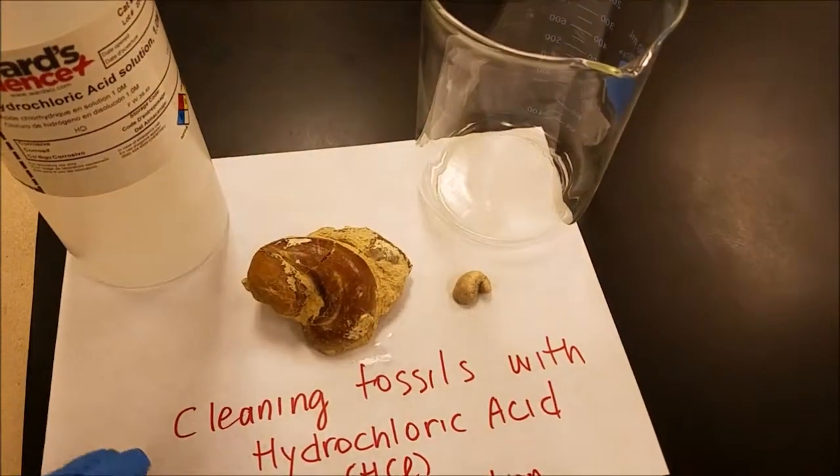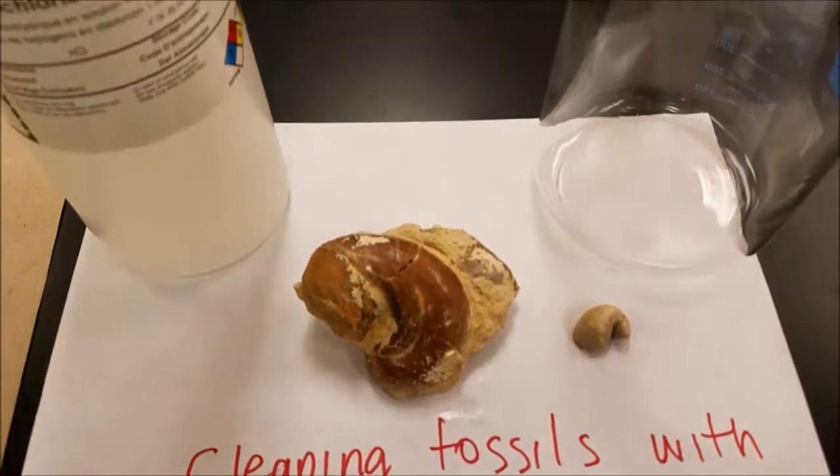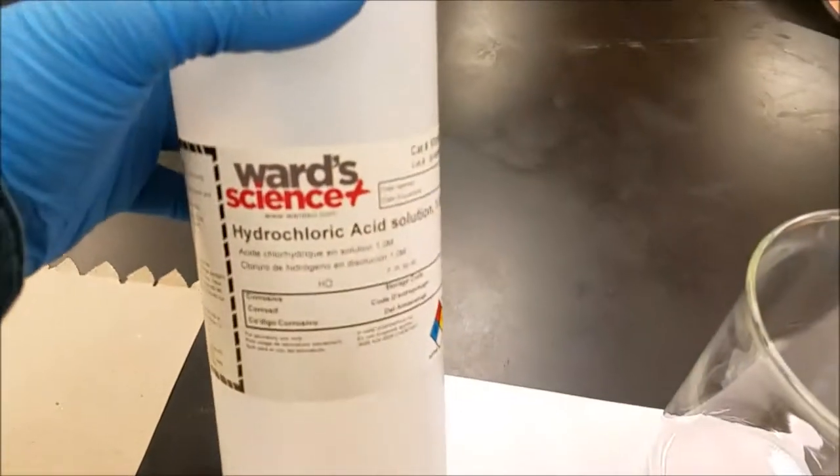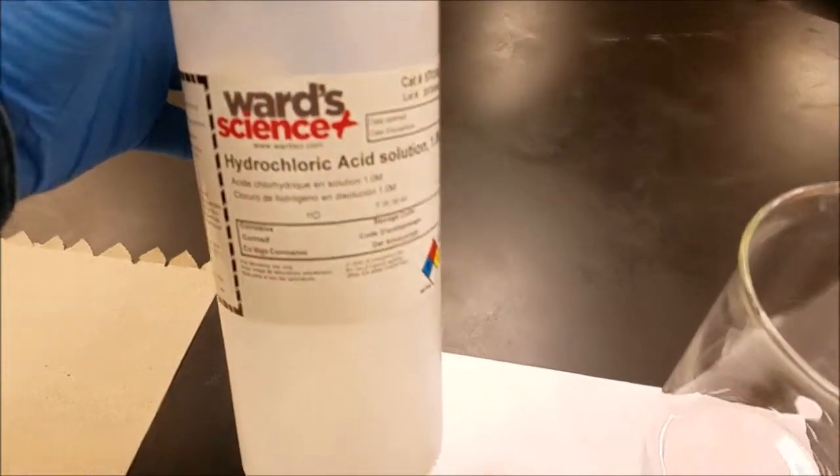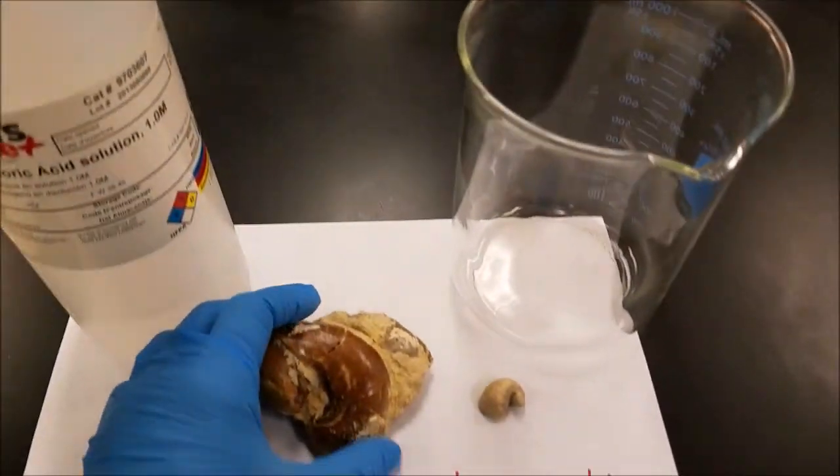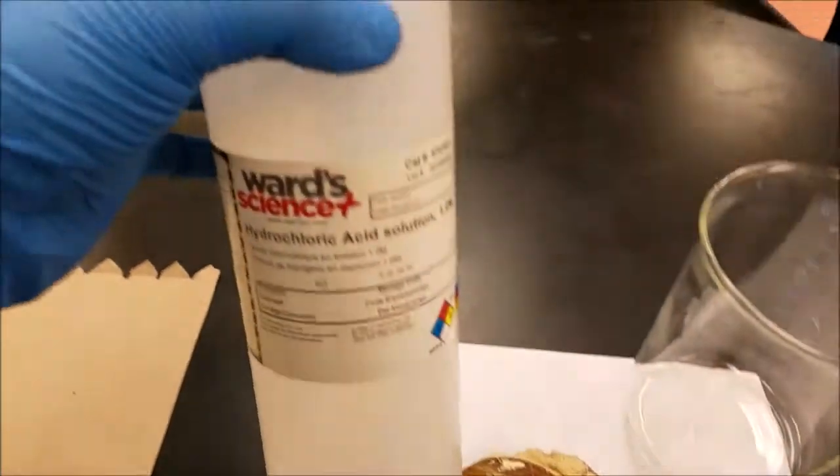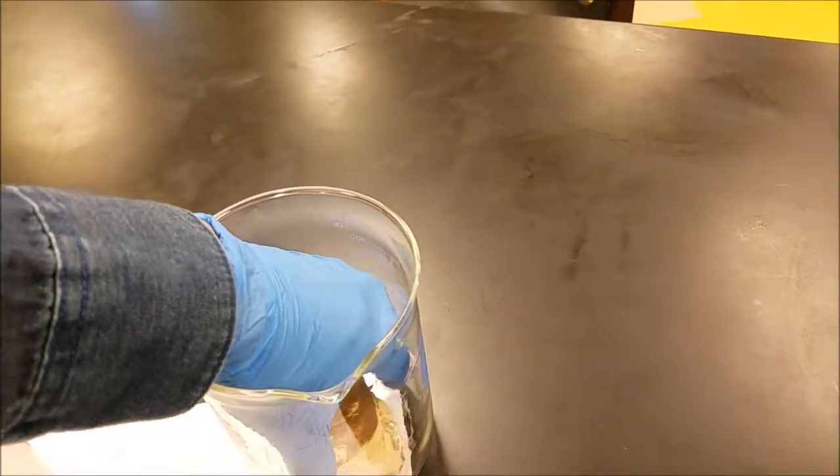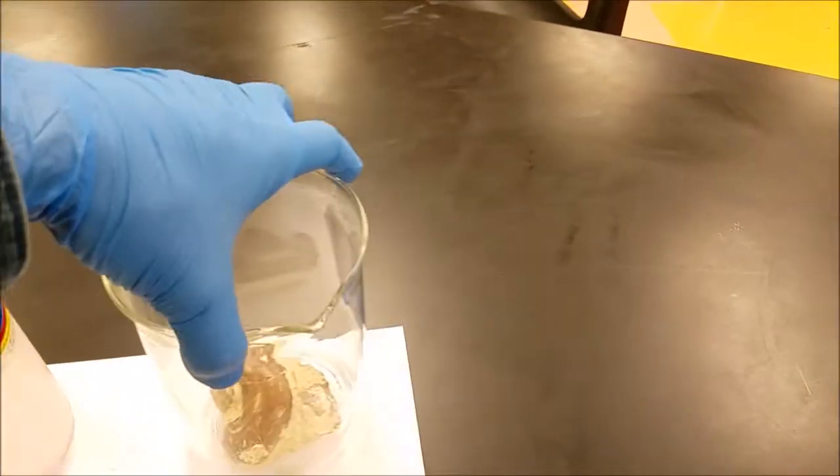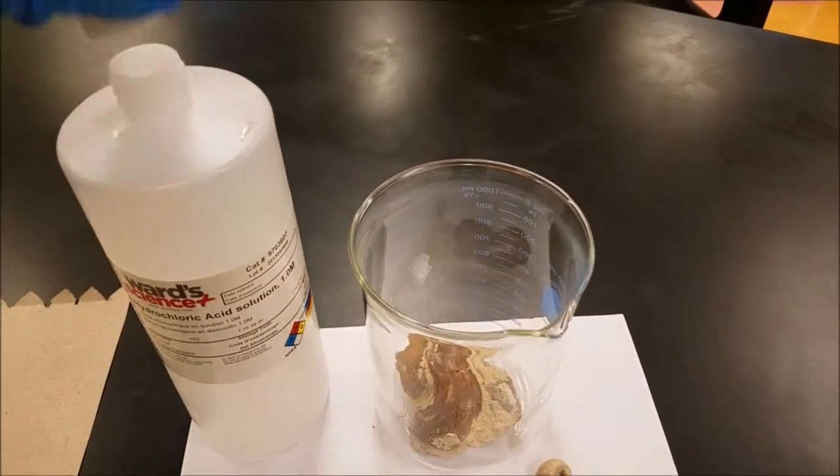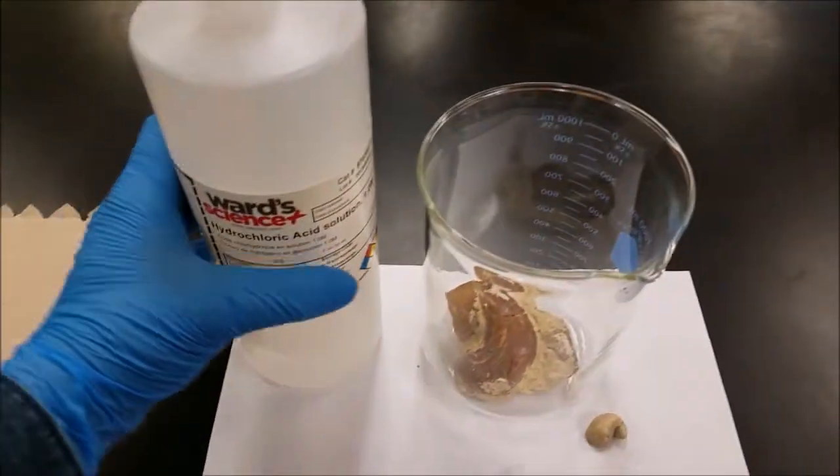Usually people use vinegar, but from my personal experience, hydrochloric acid is much faster and better for cleaning fossils. So let's go ahead. We're going to place it inside the beaker, then we're going to pour some hydrochloric acid.